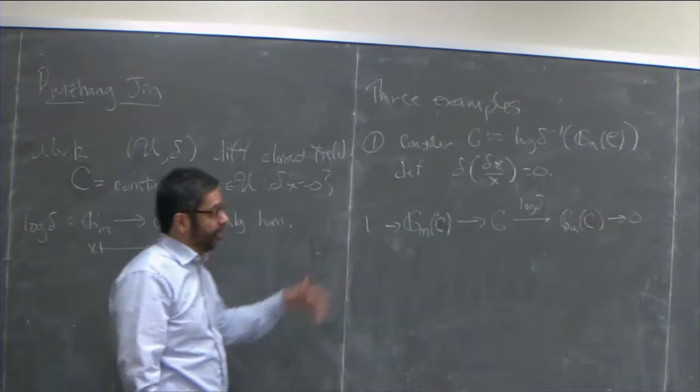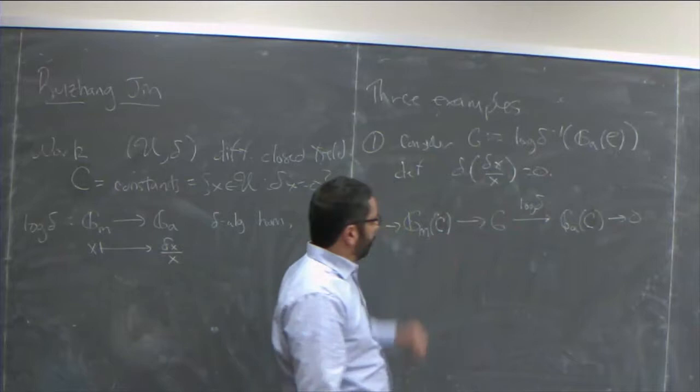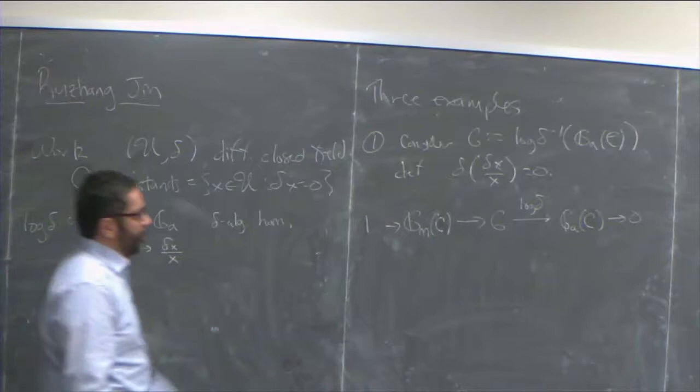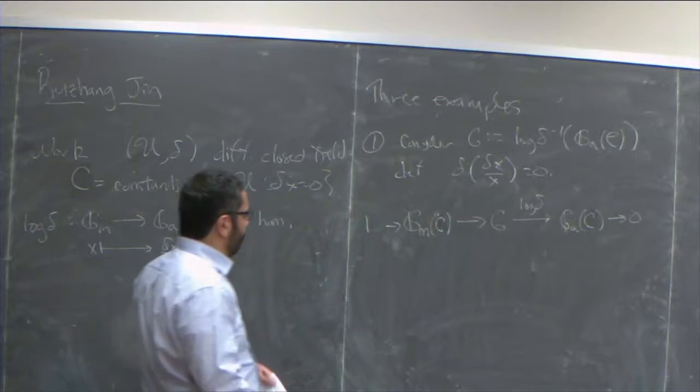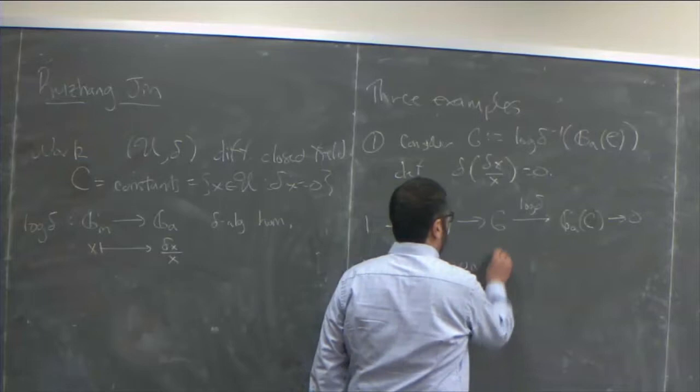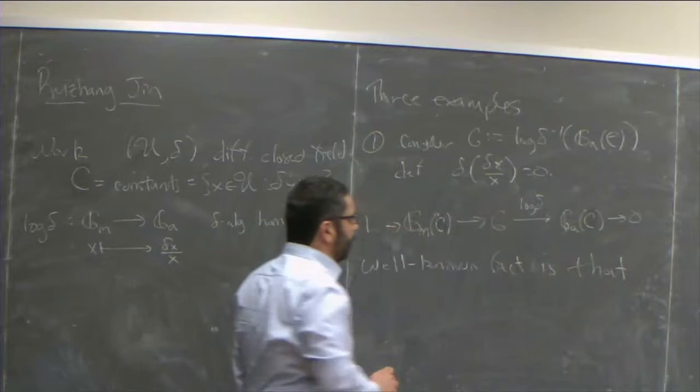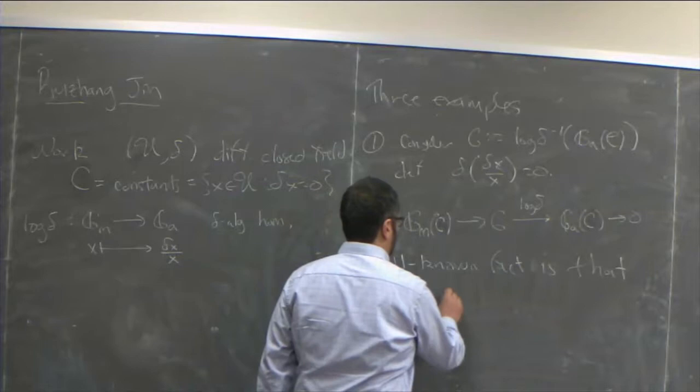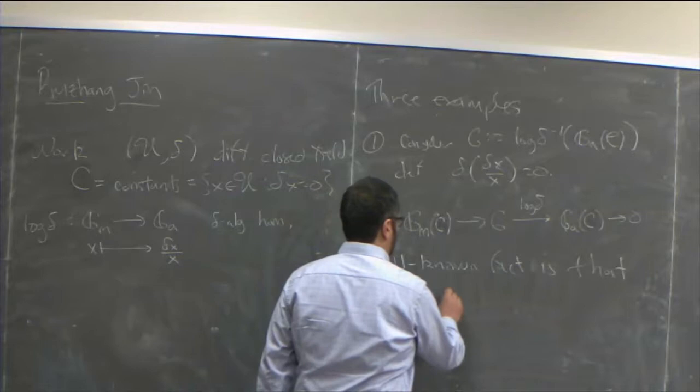This is what I mean by having a lot to do with the constants — it's built up from the constants. It has an image which lives in the constants, and the fibers are multiplicative translates of the multiplicative constants. A well-known fact is that globally, G is not living in the constants; it doesn't split as a product.